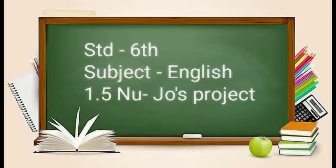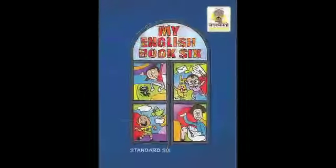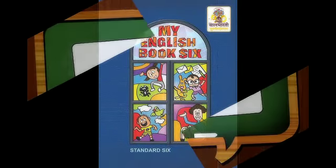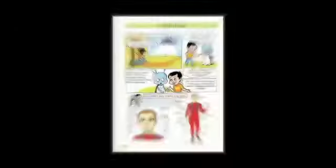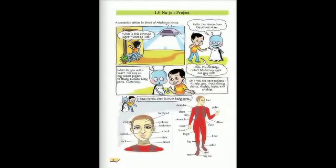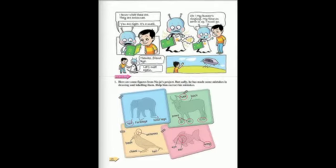Hello students, today we are going to learn Subject English Chapter 1.5 New Jaws Project. Now children, we are going to learn an interesting lesson — New Jaws Project. In this lesson there are two characters: Akshay and New Jaws. New Jaws is an alien and he is from planet Mars.